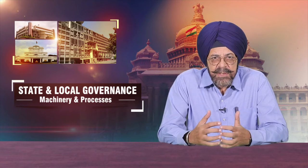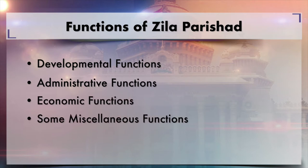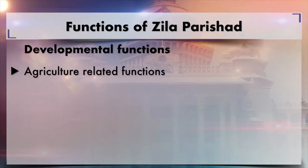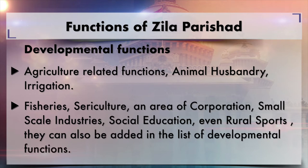As far as the functions of Zilla Parishat are concerned, theoretically we have a long list: developmental functions, administrative functions, economic functions, and miscellaneous functions. Under developmental functions, we have agriculture-related functions, animal husbandry, irrigation, fisheries, cooperation, small scale industries, social education, and even rural sports — these can all be added under the list of developmental functions.